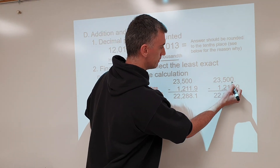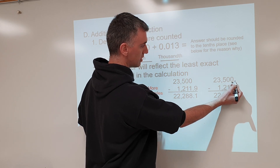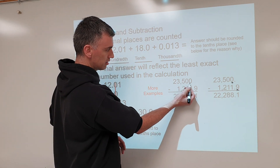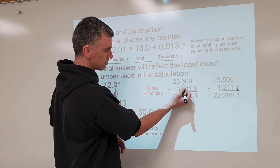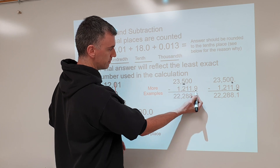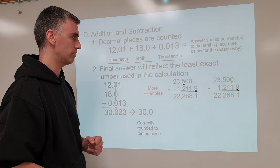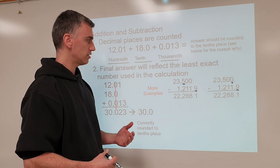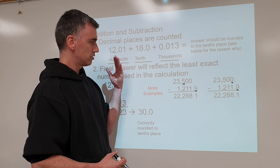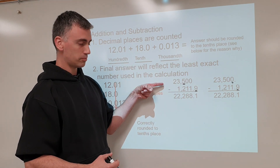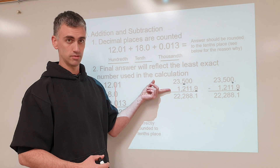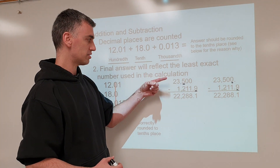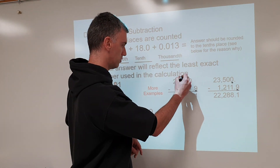Trailing zeros are significant when a decimal point is present — so that trailing zero is a significant figure. Without a decimal point, trailing zeros don't count, so the last sig fig is the last non-zero digit. Looking at these two numbers, the top number is the least accurate because its last sig fig is furthest to the left, so it determines that we round at that decimal place.